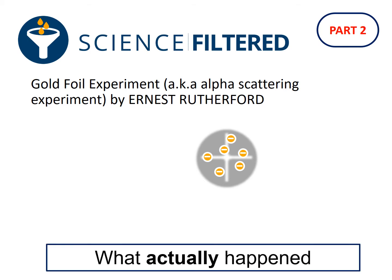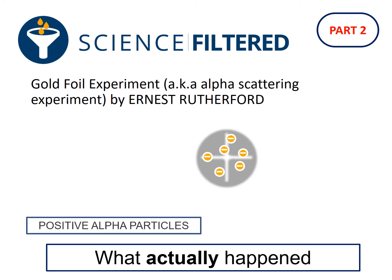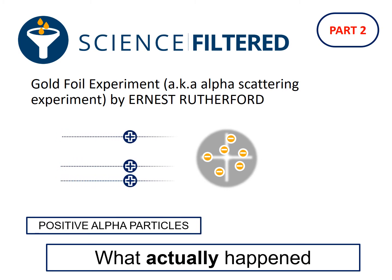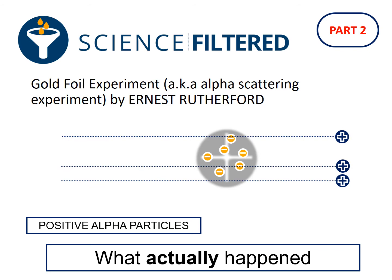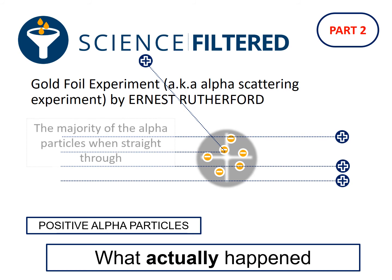What actually happened when Ernest Rutherford did this experiment was that the positive alpha particles — the vast majority of them — went straight through when they were shot at those gold atoms in that foil. But a very tiny number of them deflected at really extreme angles, as you can see here.